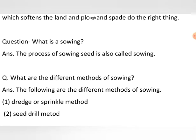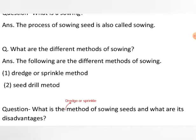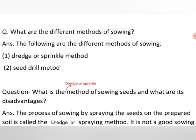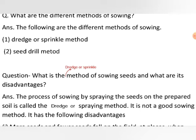What is sowing? Sowing is the process of placing seeds in the prepared soil. When the seeds are sown in prepared soil, it is known as sowing. There are different methods of sowing: the first is the broadcast or sprinkle method, and the second is the seed drill method. These are the two major methods adopted by farmers to sow seeds in prepared land.